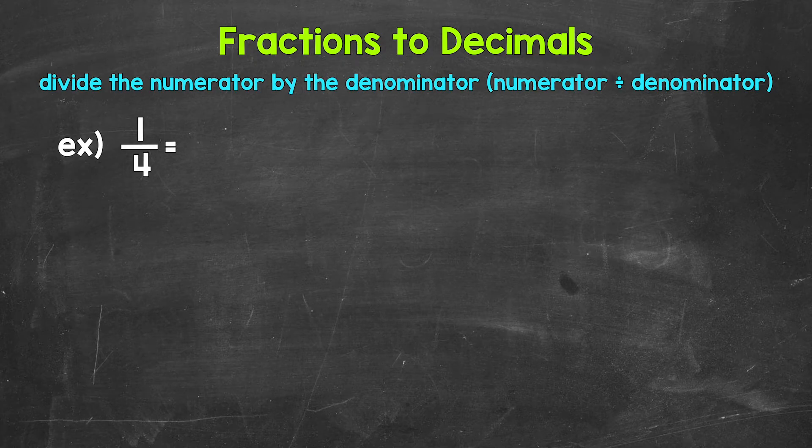When we convert a fraction to a decimal, we can divide the numerator, the top number of the fraction, by the denominator, the bottom number of the fraction.